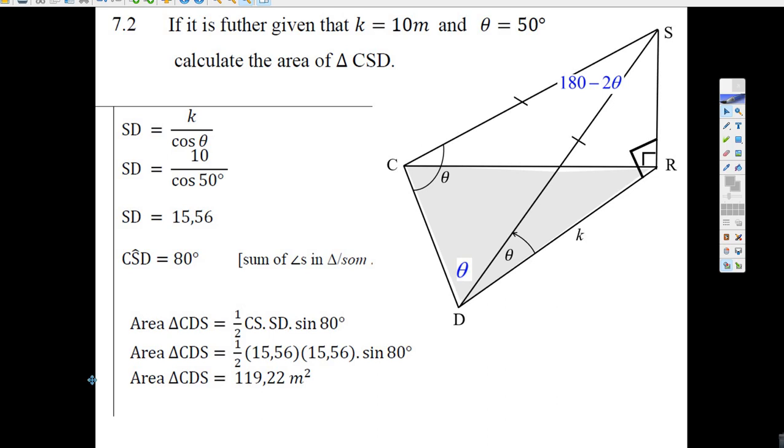Okay, this is the second part of the 3D trig problem. Everybody should get the first thing for sure. They say, if k equals 10 meters and theta equals 50 degrees, calculate the area.